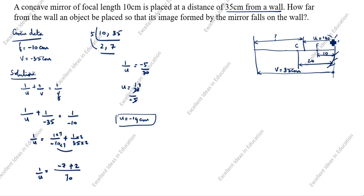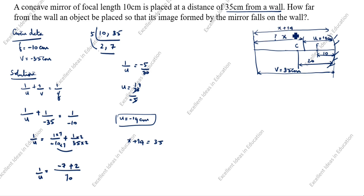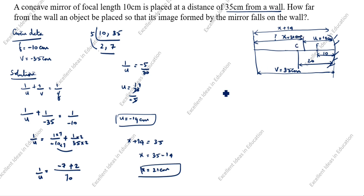So this value is 14 centimeter. We take the unknown distance from the wall as x. Then x plus 14 equals 35, so x equals 35 minus 14, which gives x equal to 21 centimeter. So the object must be placed 21 centimeter from the wall. This is the first method. Now we will see the second method.